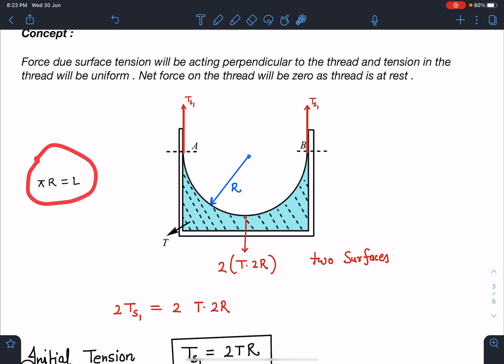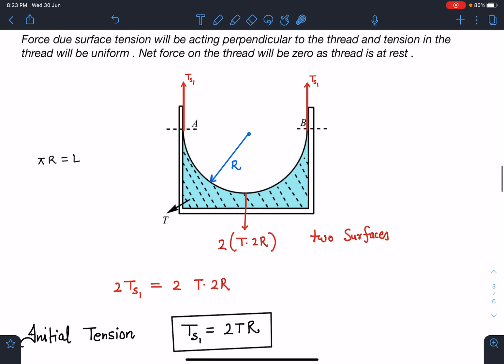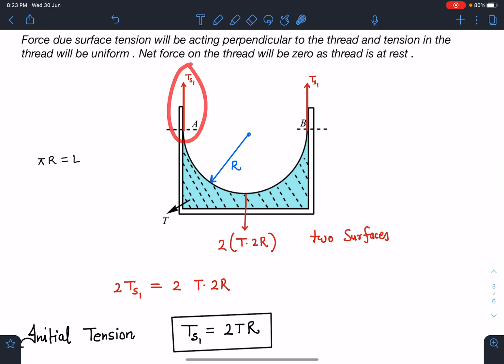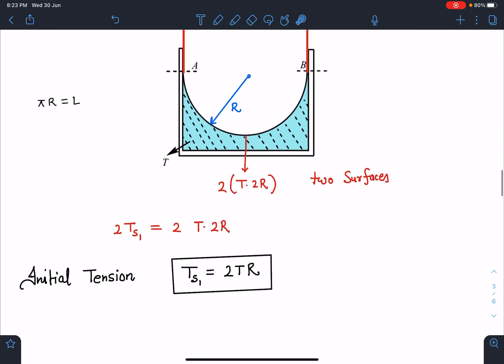So since length of the thread is given, so initially this radius of the circle is R. So pi R is L and now if you draw the free body diagram of this, so this is the initial tension in the string TS1 I am writing. So this TS1 is going to be surface tension force. As we know, whatever curve shape you take, it will be exactly equal to this length. So here directly I can use this result that surface tension force on one surface is T into this distance that is 2R and there are two such surfaces. So first balancing equation is going to give me 2TS1 is equal to 2 times T into 2R. So initial tension in the string is 2TR.